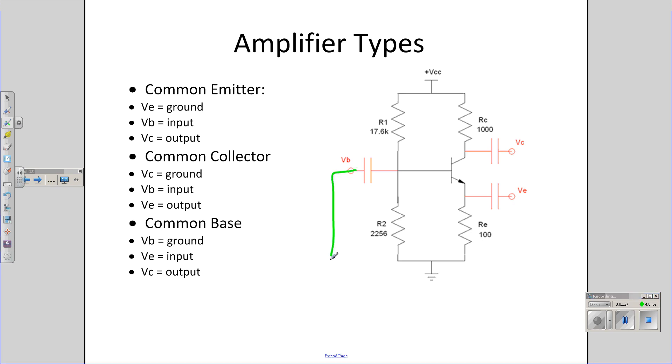Third option is common base, take the base, tie it to ground. Here's your input, here's your output. That's called a common base amplifier. Again, we'll look at that in the next video.